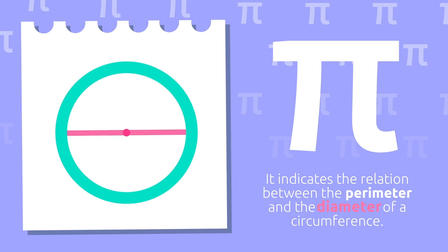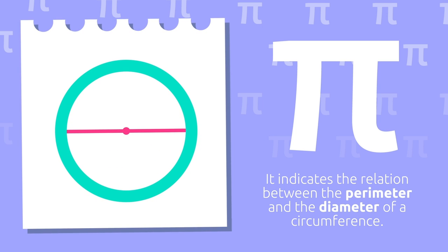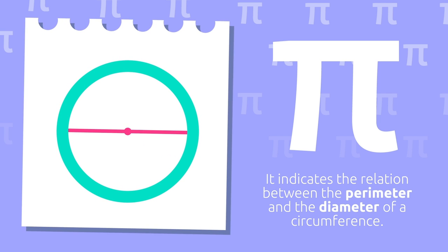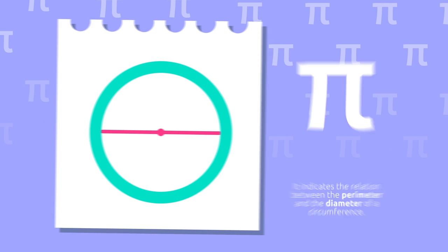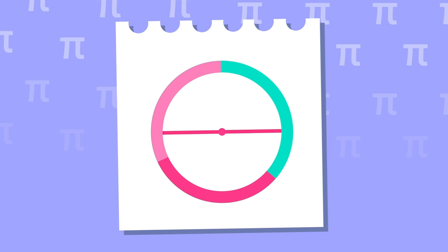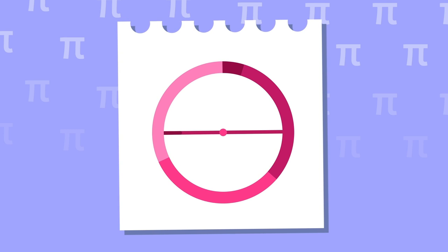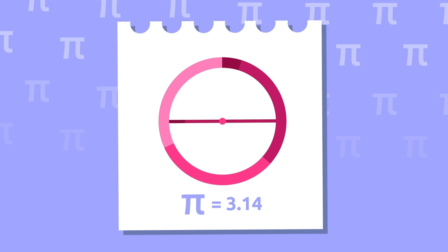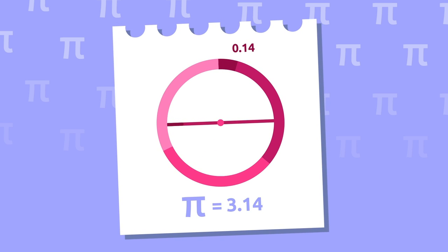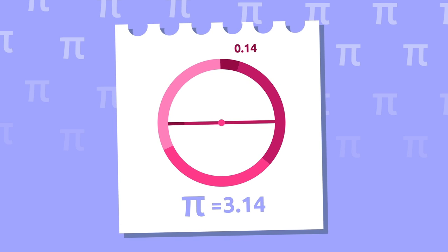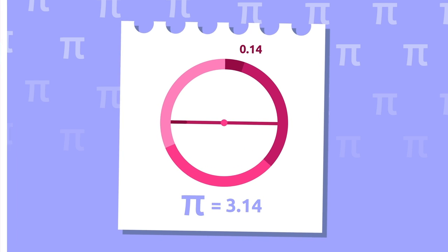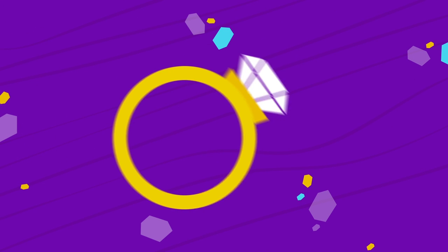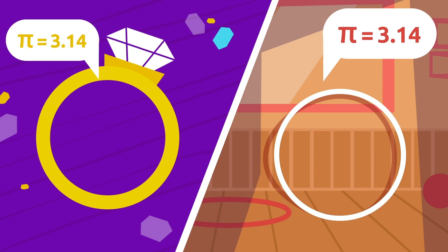It's about fitting the diameter as many times as possible into the perimeter of the circumference. One, two, three — and a little bit more. We can fit three diameters into the circumference and a small part — point one four. That's why we know that pi equals 3.14.